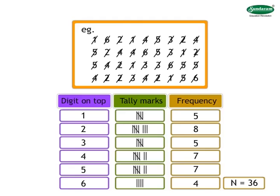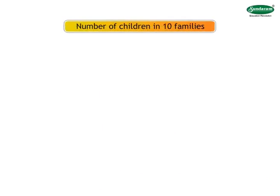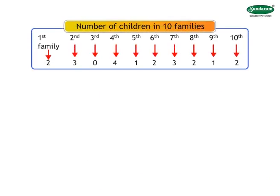For example, 2 vertical lines means 2. Now, let us draw one more frequency table. A person surveyed 10 families in his neighborhood. The number of children in each family he surveyed is as shown on the screen. From the given data, let us prepare a frequency table.